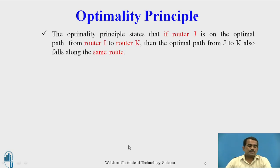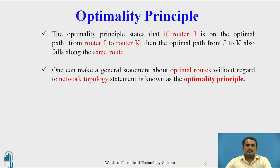Optimality principle: the optimality principle states that if router J is on the optimal path from router I to router K, then the optimal path from J to router K also falls along the same route. One can make a general statement about optimal routes without regard to network topology — this concept is known as the optimality principle.